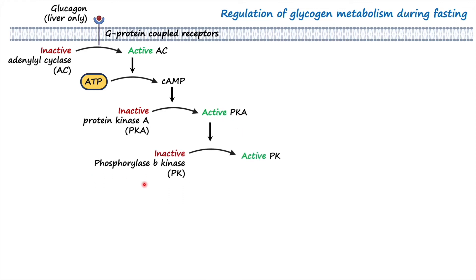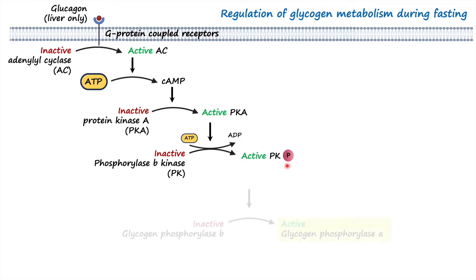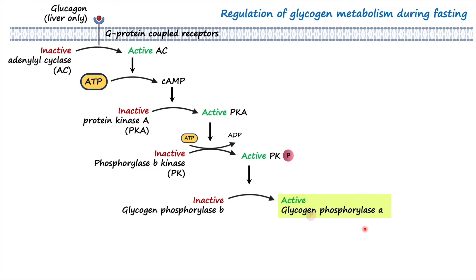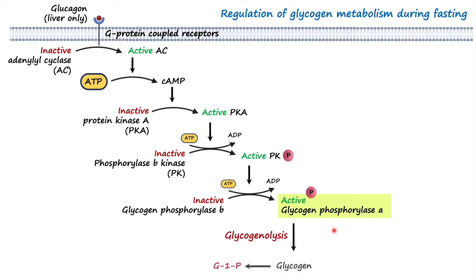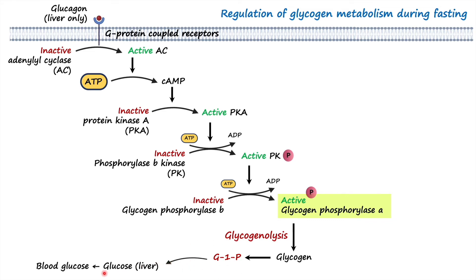Activated PKA activates phosphorylase b kinase by phosphorylating it, consuming ATP to produce ADP. Phosphorylase b kinase then activates glycogen phosphorylase (phosphorylase a) by phosphorylating it — also an energy-consuming process. Since glycogen phosphorylase is the rate-limiting enzyme for glycogenolysis, it subsequently activates glycogenolysis, converting glycogen first into glucose-1-phosphate. In the liver, glucose-1-phosphate is then converted into glucose, which is released into the bloodstream.